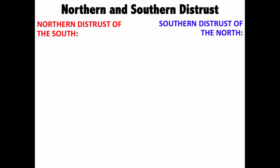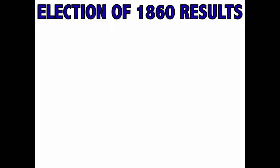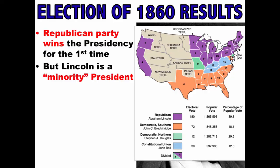All of these things increased Northern and Southern distrust for one another. As you can see, there were a whole bunch of reasons why the North and the South didn't really trust one another — not to mention they had fundamentally different ways of life and different interests politically, economically, and socially. The final sectional conflict we're going to cover today is the election of 1860 and its results. The Republican Party won the presidency for the first time, but Lincoln was a minority president — elected without a majority of the popular vote, as there were so many candidates running in 1860.